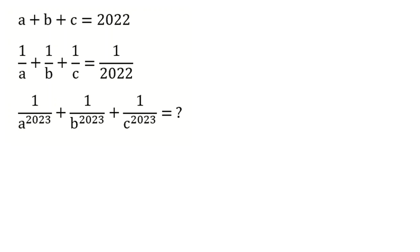We are going to solve Vietnamese Mathematical Olympiad 2022. The problem states: A plus B plus C equals 2022, and 1 over A plus 1 over B plus 1 over C equals 1 over 2022. These are the given assumptions. The problem wants us to find 1 over A to the power of 2023 plus 1 over B to the 2023 plus 1 over C to the 2023.